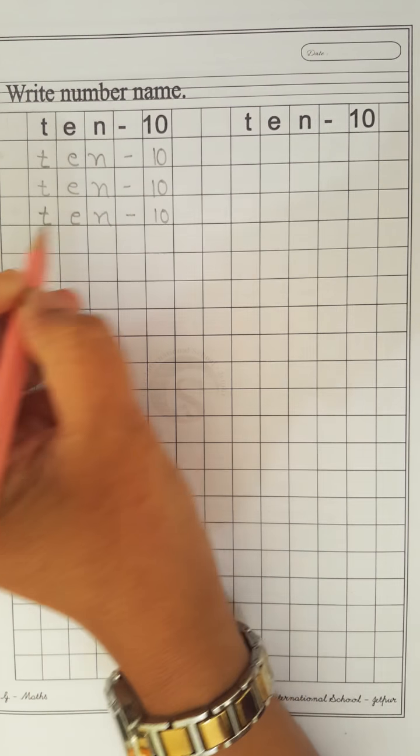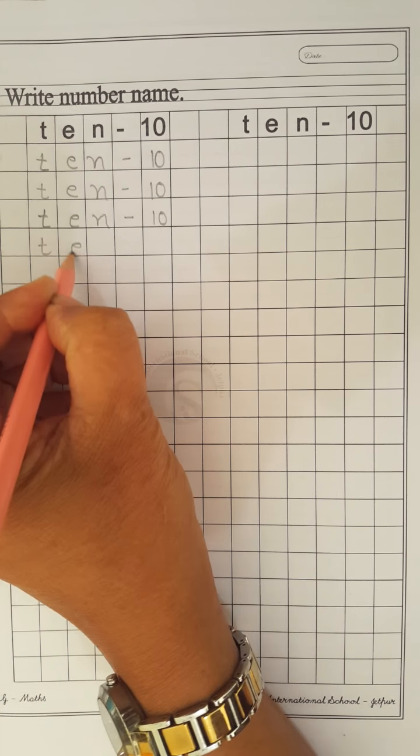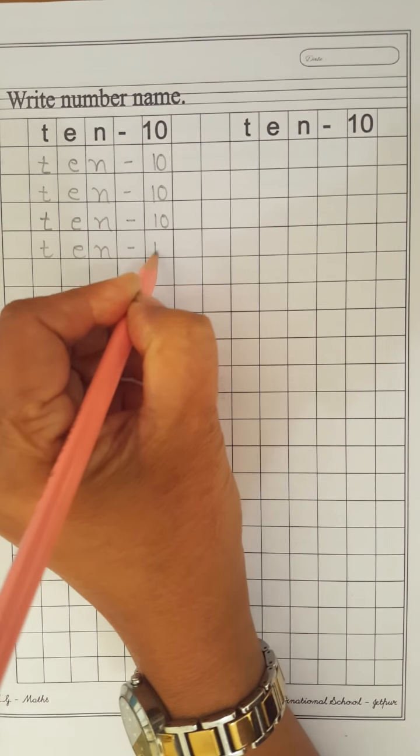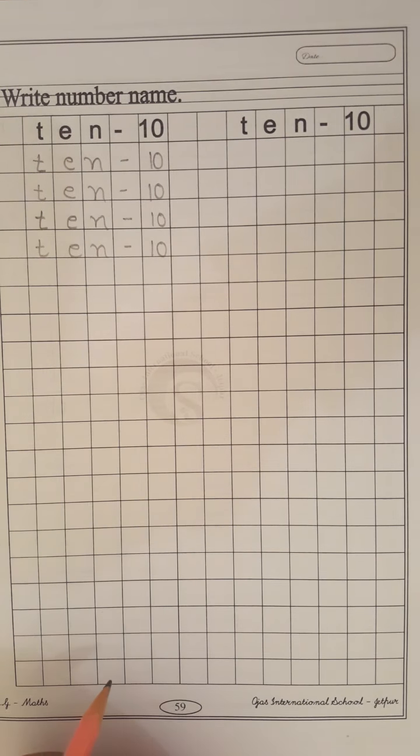And whenever you write, what you do? Speak and write. How to speak? T-E-N-10. In this way, you have to complete this line.